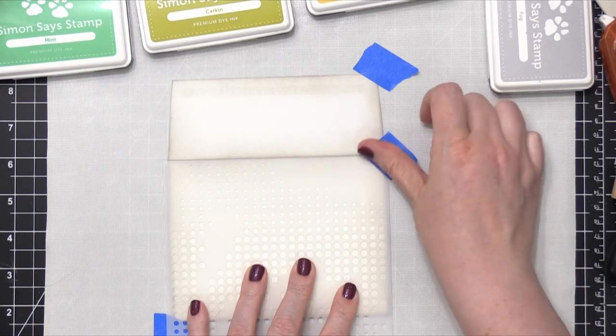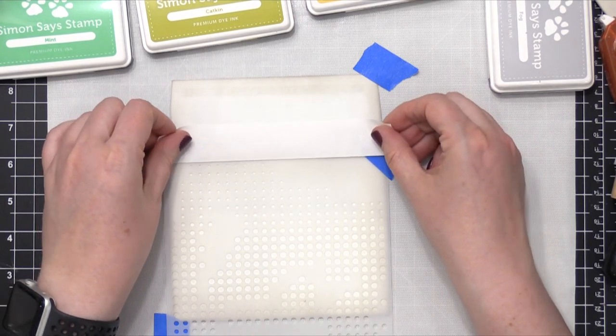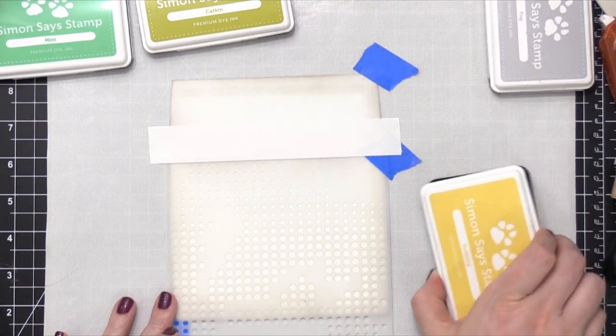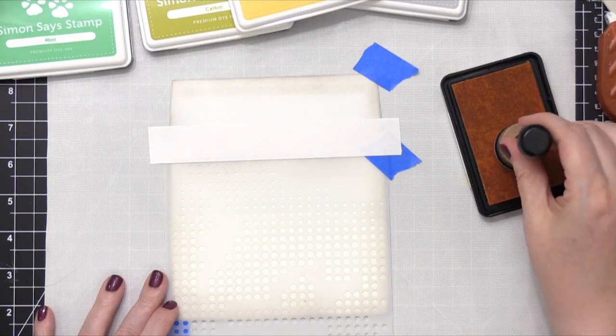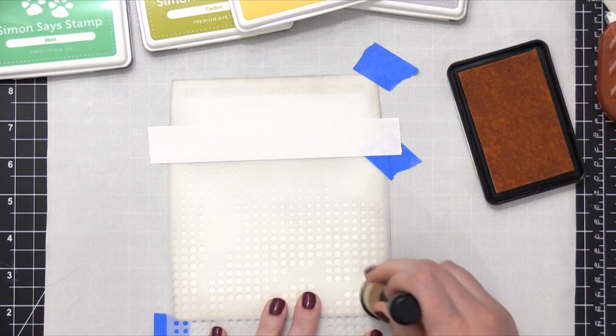So I'm taping down the stencil just on the main portion of the envelope. I'm going to protect the area just past that fold with some post-it tape. The next color I'm using is Duckling, and I'm gonna bring it in from the bottom right corner.